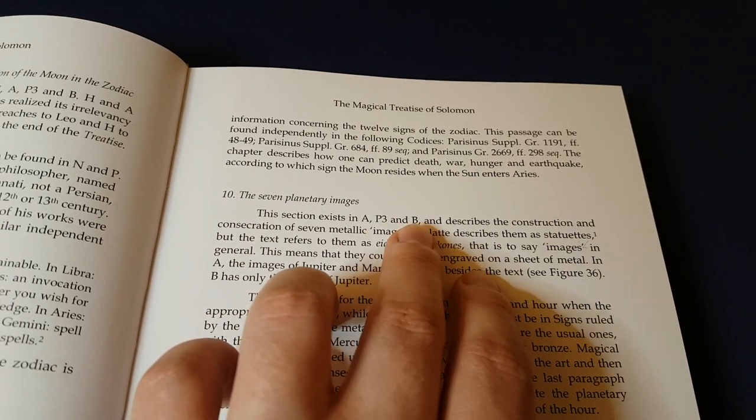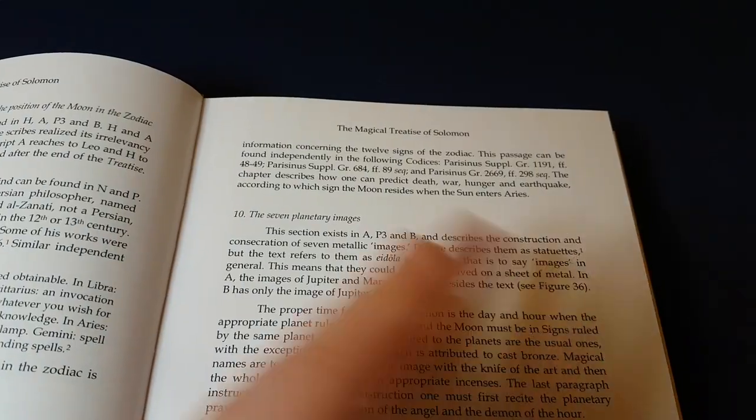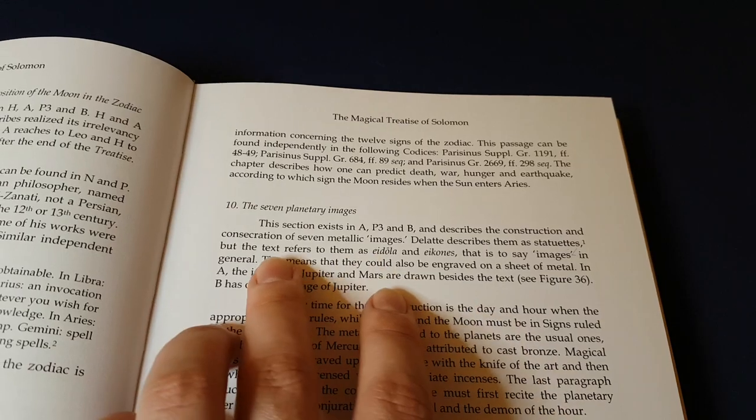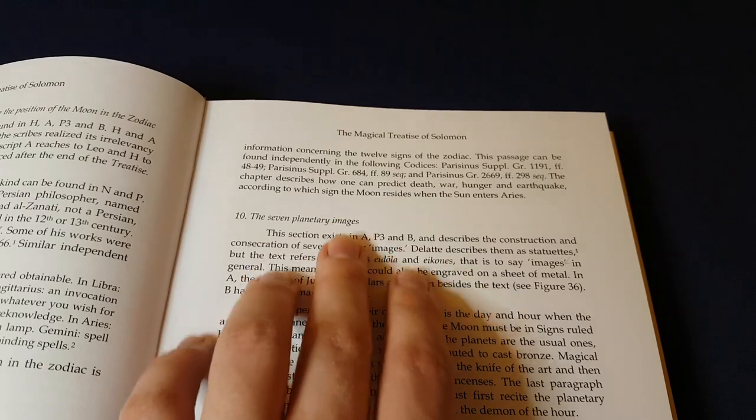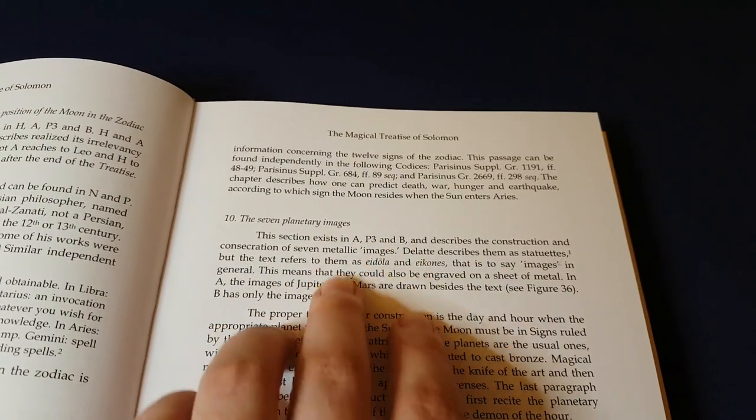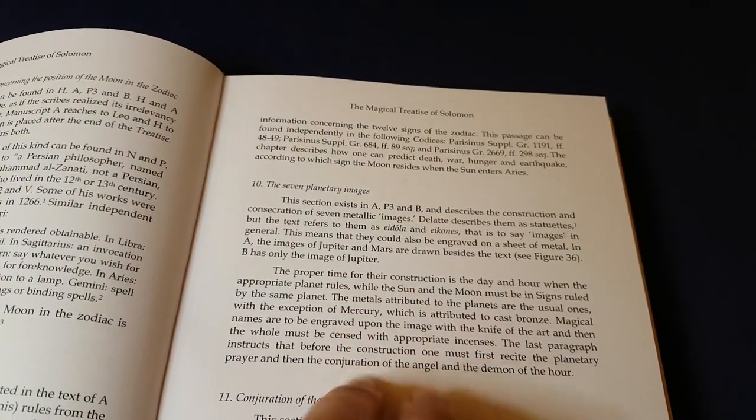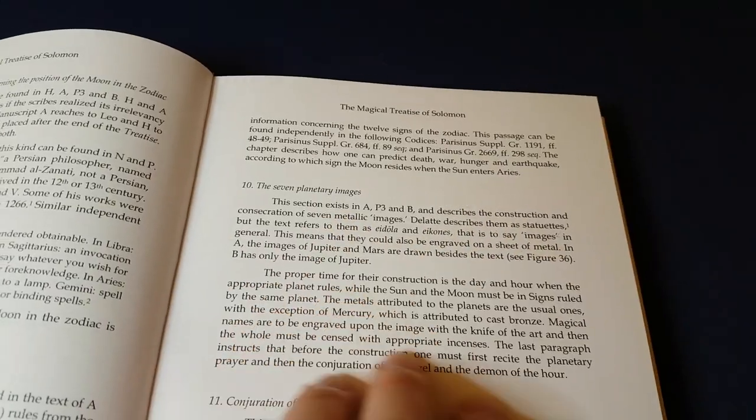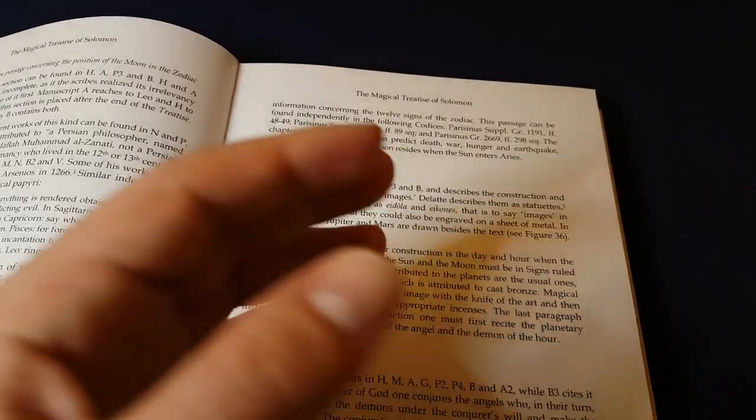These are all shortened, it's shorthand for whatever versions. Describes the construction, consecration of seven metallic images, blah blah. So this is clearly meta text, it's clearly notes, and then here he's talking about a transliteration of what can be found in that particular section.